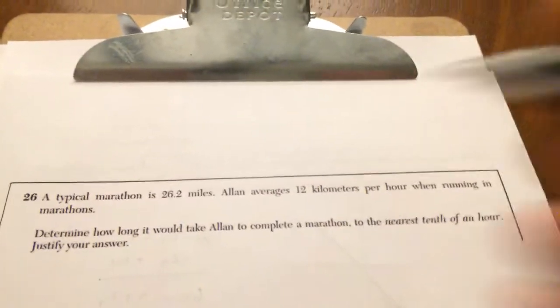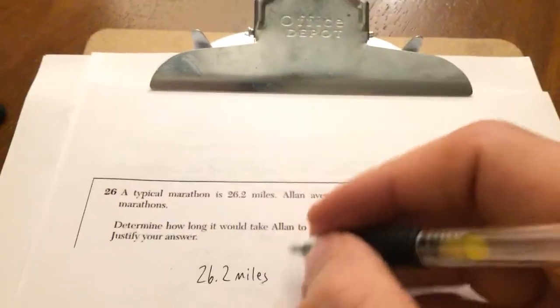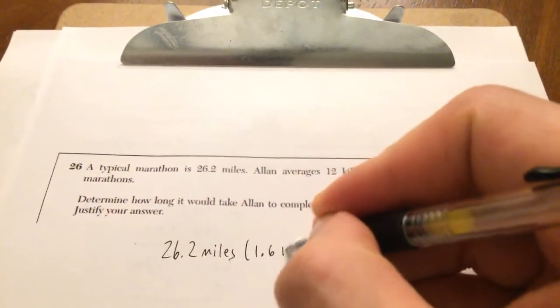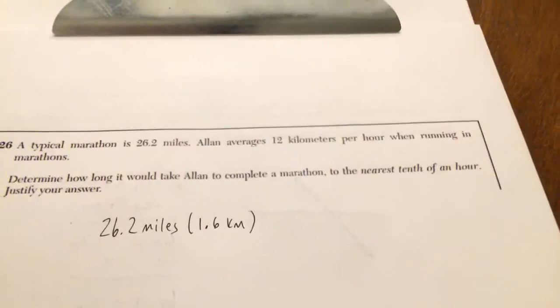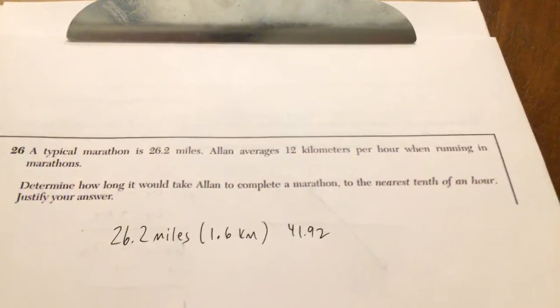A typical marathon is 26.2 miles. Using your reference tables, I believe that one mile is 1.6 kilometers. So what I'm going to do is multiply 26.2 times 1.6. I get about 41.92.